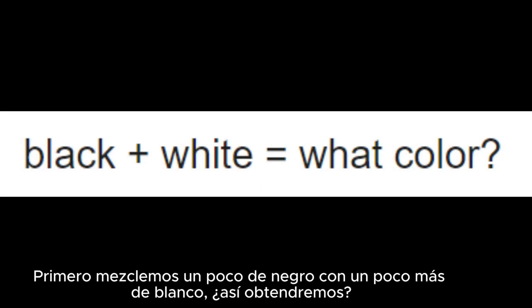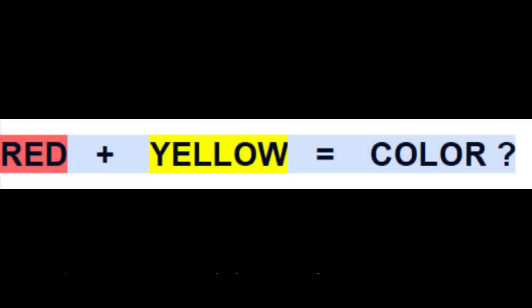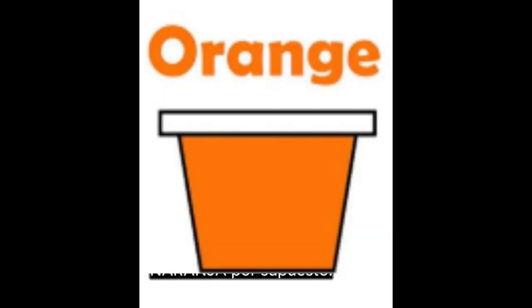First, let's mix some black with a little more white. So, what will we get? Yes, gray. Second, let's mix red and yellow. So, what is the color? Orange, of course.